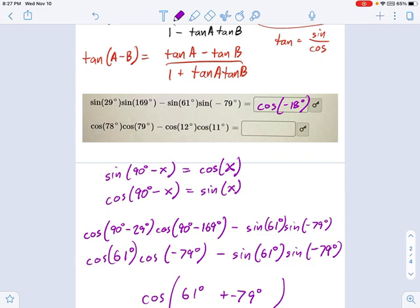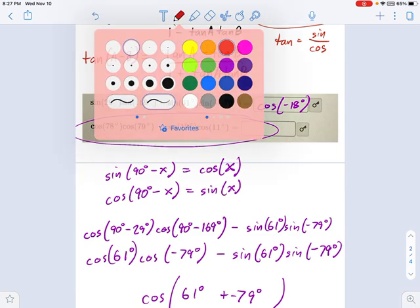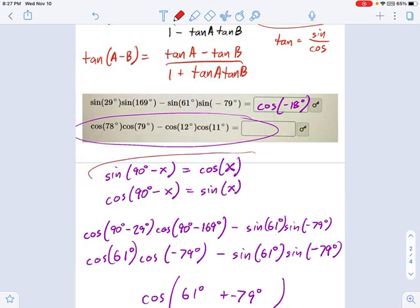Okay, and then you approach this one the same way. Except for that one, I would suggest using this identity right here, this co-function identity, where you change some of those cosines into sines. And then you'll have your way back to a cosine summation identity.